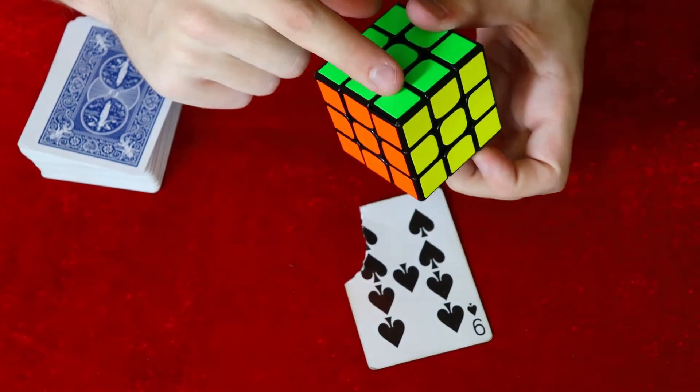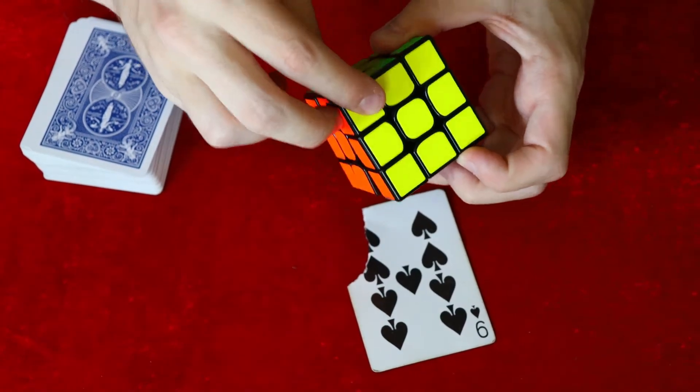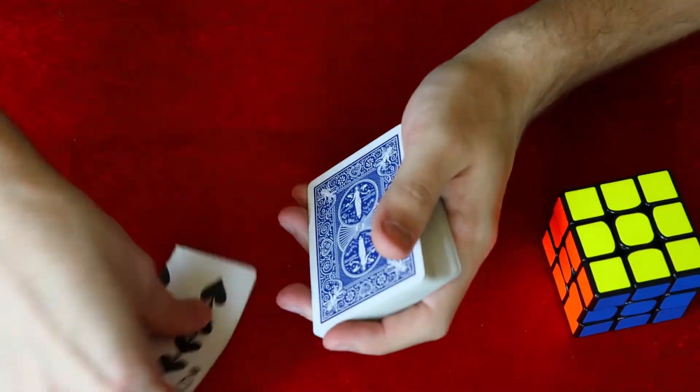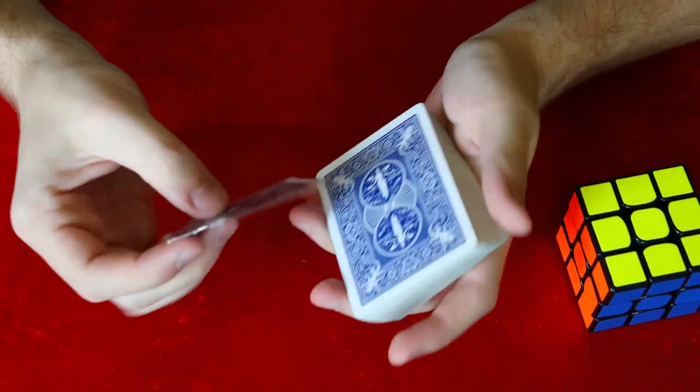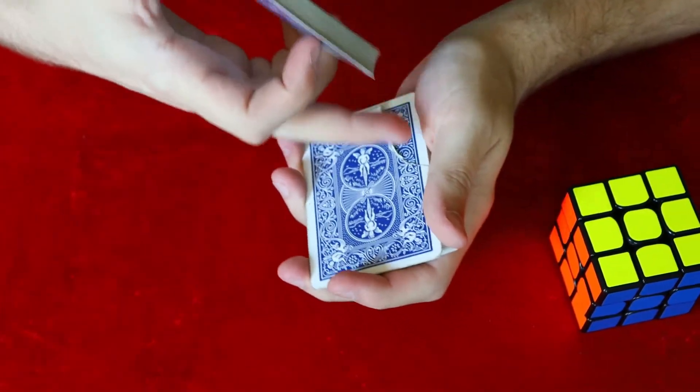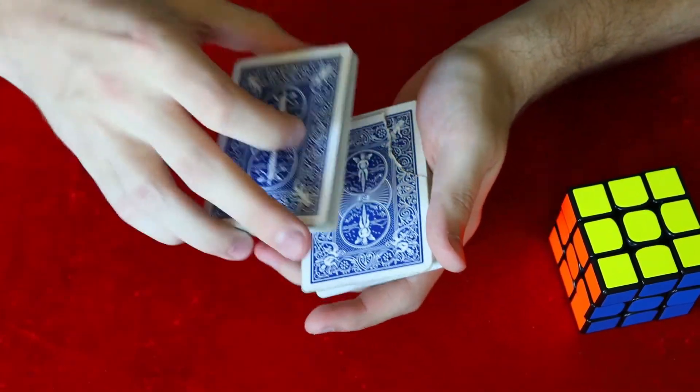So now you just got to remember which piece it's in. It's obviously in the yellow, green, and orange piece right here. Now you're all set to perform the trick. You have your card with half of a piece ripped off. You're going to put that into the middle of the pack with this ripped piece facing towards you.